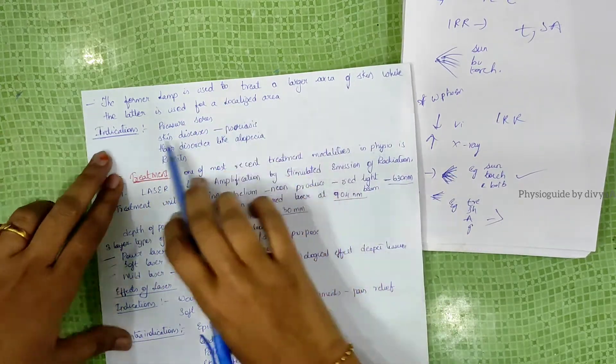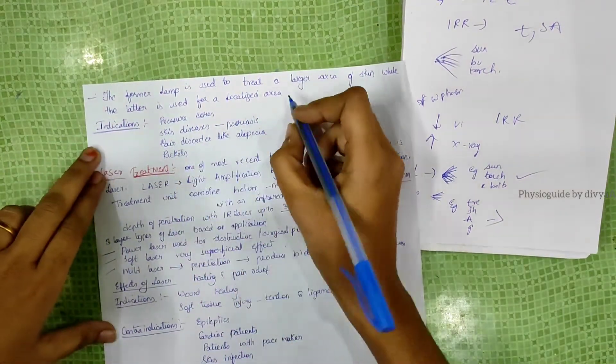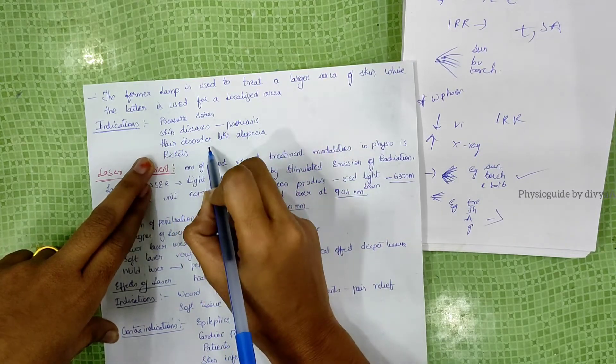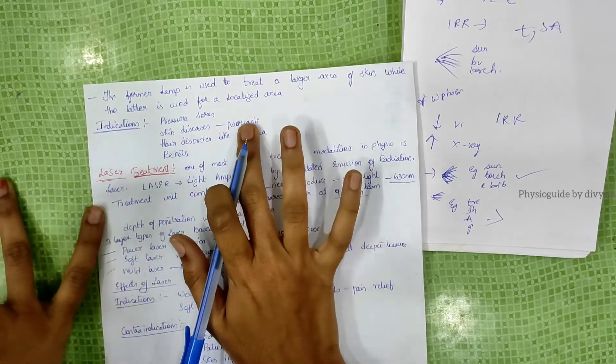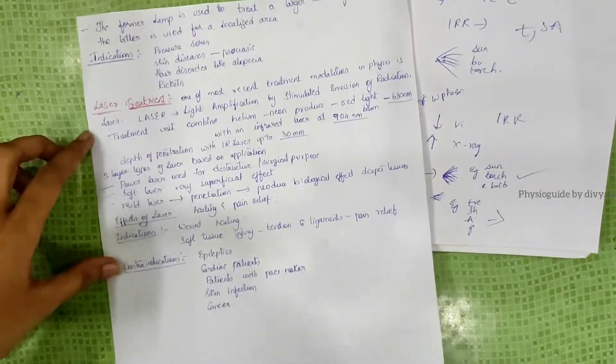Ultraviolet radiation is given for pressure sores, skin diseases like psoriasis, head disorders like alopecia, and rickets.